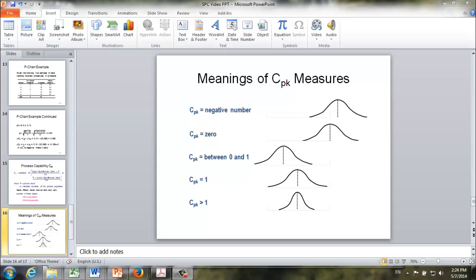And if CpK is equal to 1, that means our process is within the specification range. And if CpK is greater than 1, our process is well within the specification range.